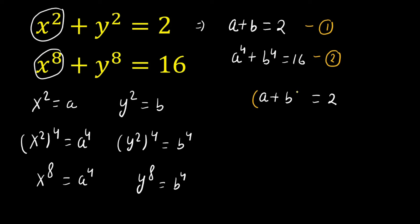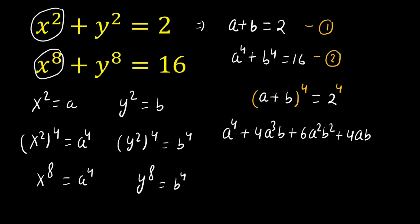Now if we take both sides of equation one to the power 4, in the left hand side we apply (a + b)⁴, which expands to a⁴ + 4a³b + 6a²b² + 4ab³ + b⁴, and this equals 2⁴ = 16. Now a⁴ + b⁴ is replaced by 16.